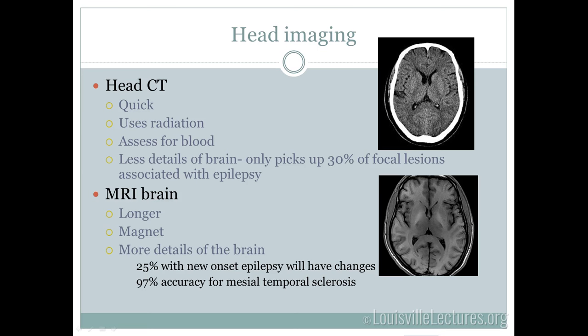For head imaging, there are two modalities: CT scans and MRIs. CT scans take less than a minute and are a nice screening tool for unstable or agitated patients. They'll show bleeds, increased intracranial pressure, edema, and large strokes — anything life-threatening. However, they use radiation, which is a concern in children or pregnant women, and they're less detailed. For focal lesions associated with epilepsy, CT only picks it up in about 30% of people, so sensitivity is pretty low.